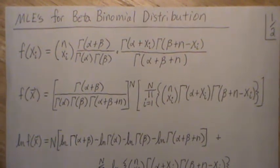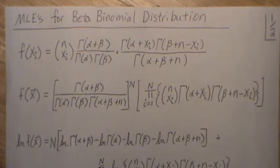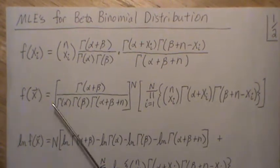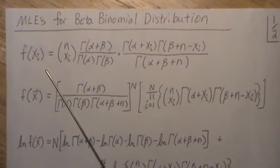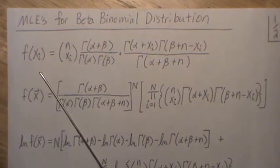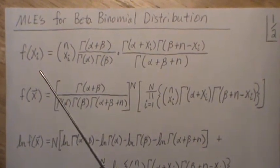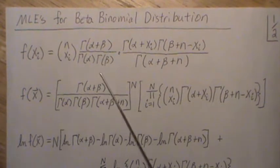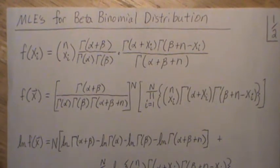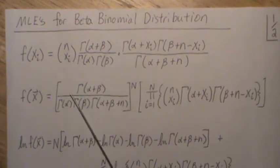Hello. In this video we're going to look at deriving the maximum likelihood estimates for a beta binomial distribution. This is the probability mass function for a beta binomial distribution. I have a video called 'The Mean and the Variance of a Beta Binomial Distribution' where we derive this distribution and calculate the mean and variance. But here we're just going to derive the maximum likelihood estimates.